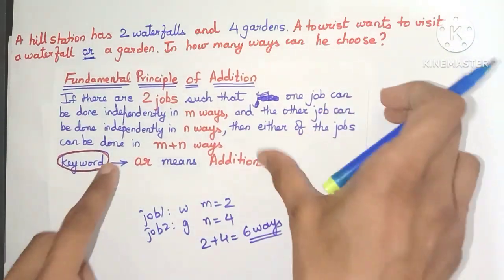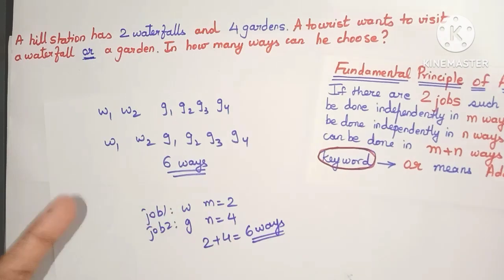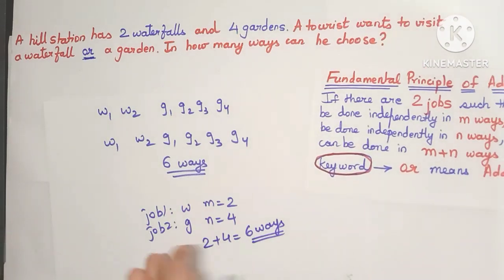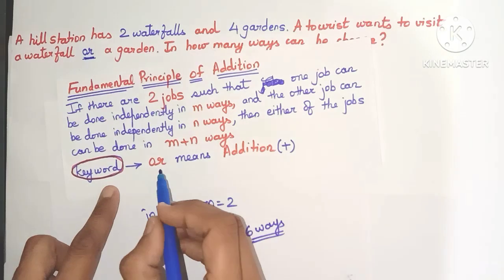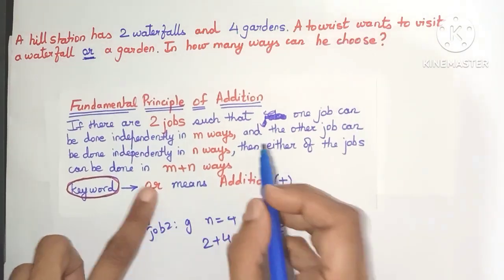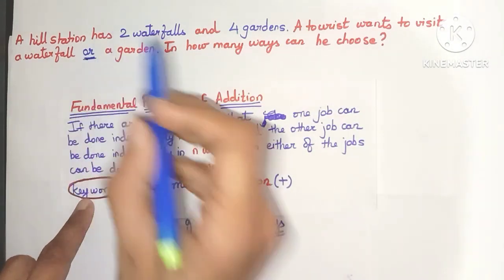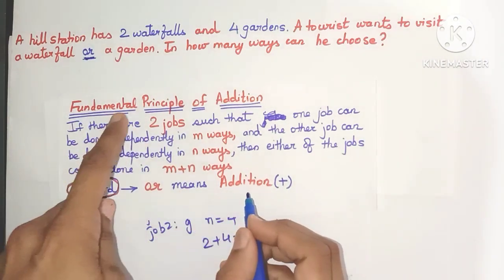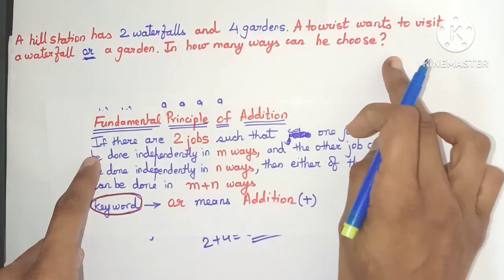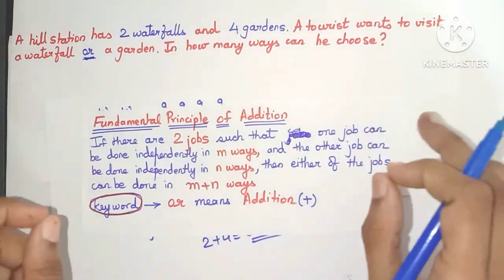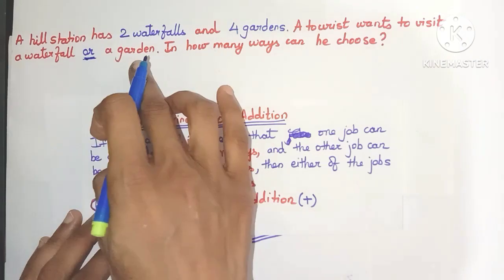Without listing out the combinations, just by using this principle we get the same answer. The main thing to remember is the keyword 'or' — whenever jobs are connected by 'or,' always use the principle of addition. Also, the entire job is completed if just one of the jobs is completed; you don't have to do all the jobs.